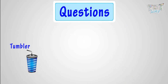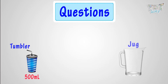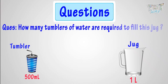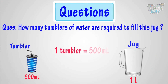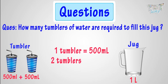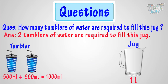Capacity of one tumbler is 500 milliliters, and capacity of this jug is 1 liter. Then, how many tumblers of water are required to fill this jug? One tumbler contains 500 milliliters. Two tumblers will contain 500 milliliters plus 500 milliliters equals 1,000 milliliters or 1 liter. So, 2 tumblers of water are required to fill the jug.